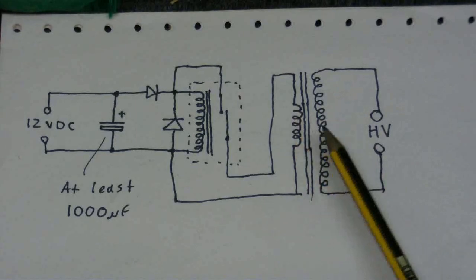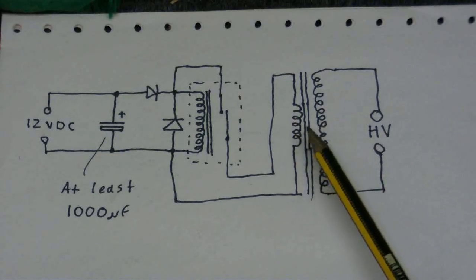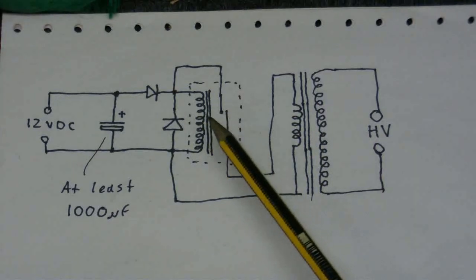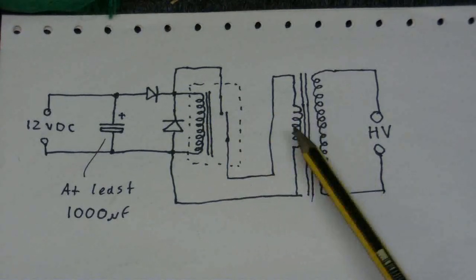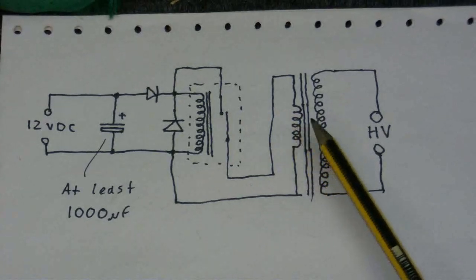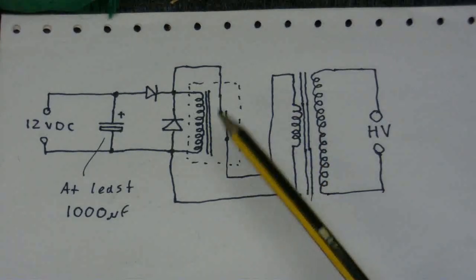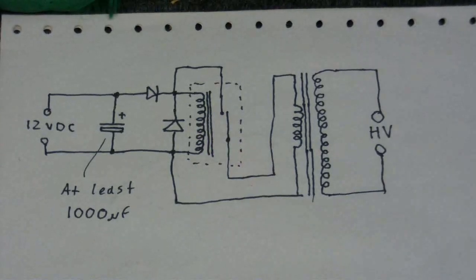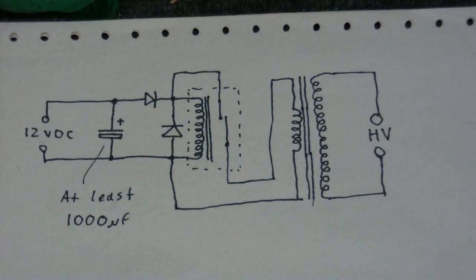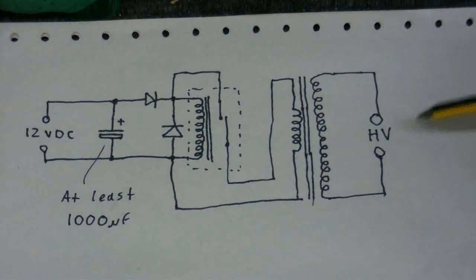But because this takes so much power from the power supply, there's no power left to energise the relay, so the relay opens again, which disconnects the transformer from the power supply. And because the transformer's disconnected, there's more power left to energise the relay again. So the whole thing goes and basically just self-oscillates, and we get a high voltage here.